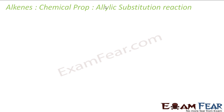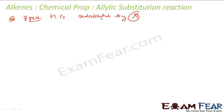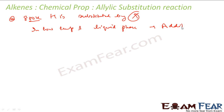Allylic substitution is pretty rare. It occurs only when you heat at very high temperature, maybe 800 Kelvin or higher. At this temperature, the hydrogen is substituted by a halogen (X). If you have low temperature and liquid phase, then we go for addition reaction. At high temperature and gas phase, we get substitution.